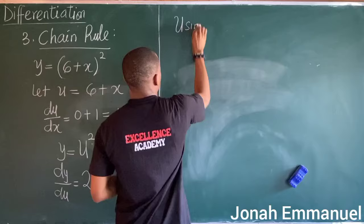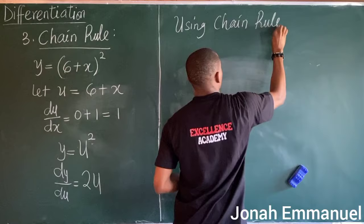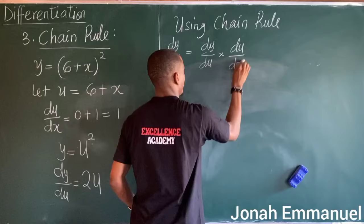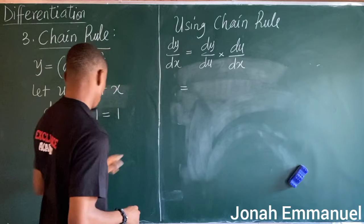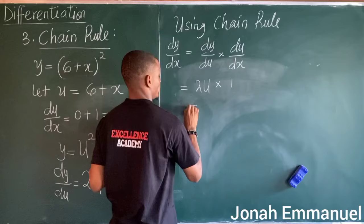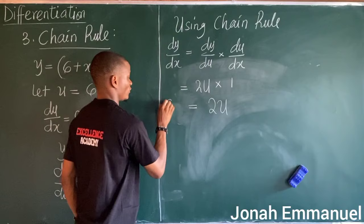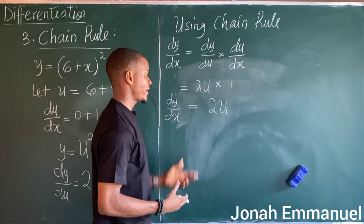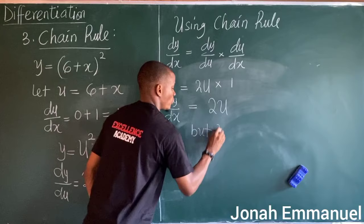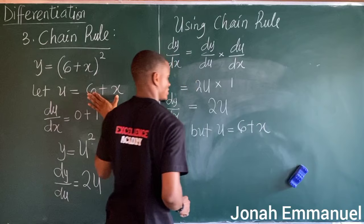Using chain rule: dy/dx equals dy/du times du/dx. dy/du is 2u and du/dx is 1, so that gives 2u times 1 equals 2u. Now I cannot leave dy/dx expressed in terms of u, so I must substitute u back in terms of x.